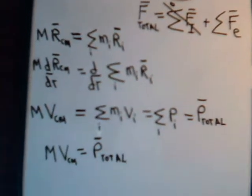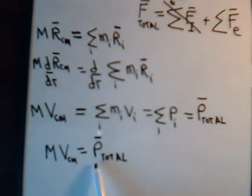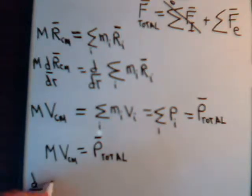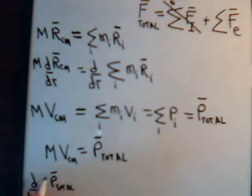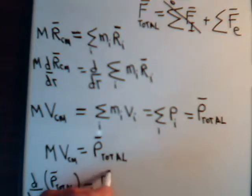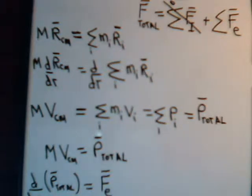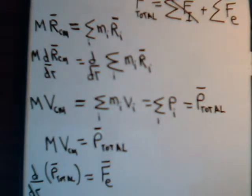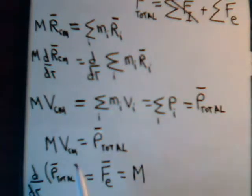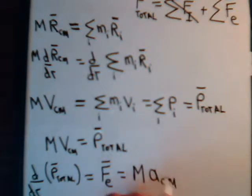Again, let's take derivatives. The derivative of the momentum is of course force. So we have d/dt of p_total. That equals the total force. But the total force is only the external forces because all of the internal ones cancel out. And that equals M times the derivative of this, which of course is just the acceleration of the center of mass.